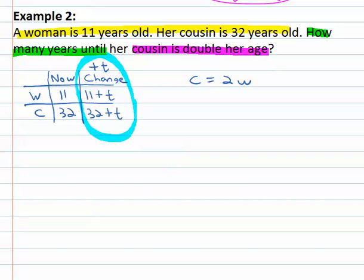Now we can use that change column with the equation to find out the relationship in the future. What was the cousin in the future? Well, the cousin is thirty-two plus t equals two w. The woman in the future is eleven plus t.